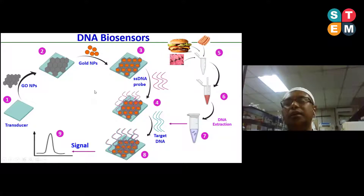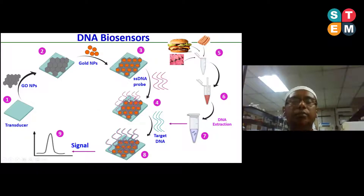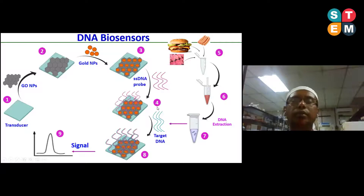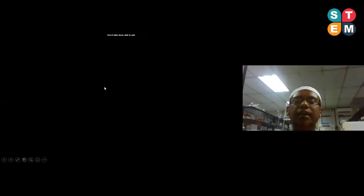This method is currently still lab-based and under research. In the near future, it may come as a commercial field-based method — the DNA biosensor. It will then be very easy for us to detect animal species in food products. Thank you.